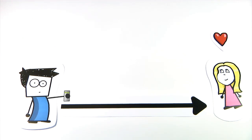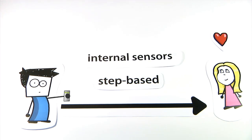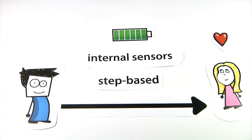His device now works step-based. It recognizes every step he makes and also the direction. All this is done with the internal sensors of his smartphone. And so it saves a lot of energy. And especially Tom is now independent from GPS. This makes Tom really happy.